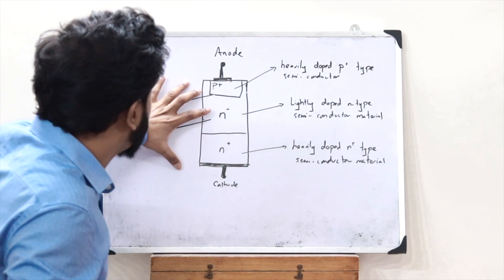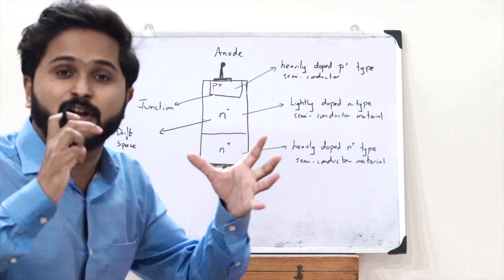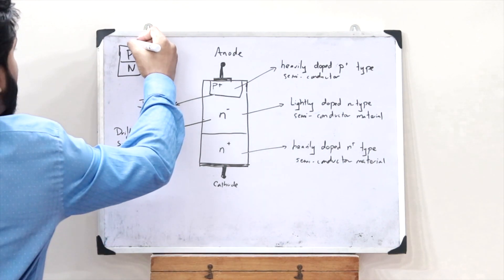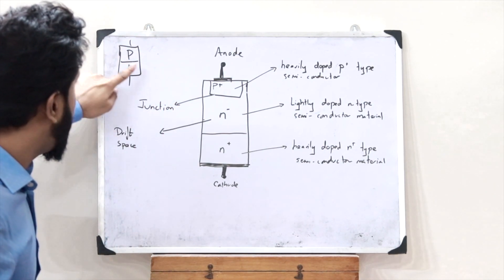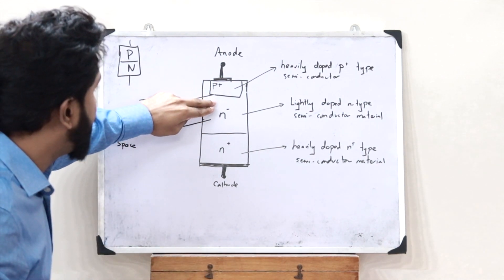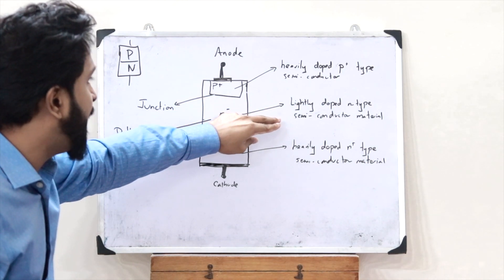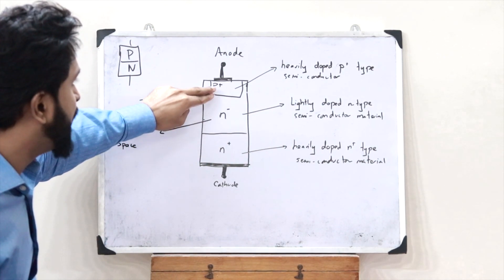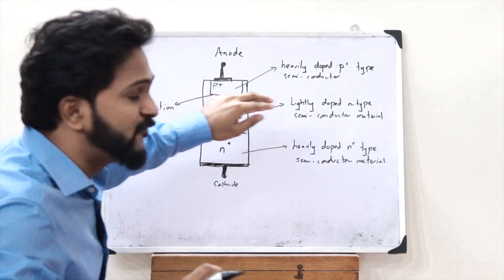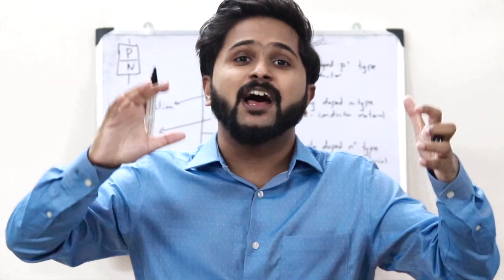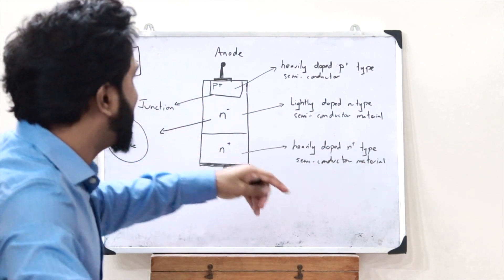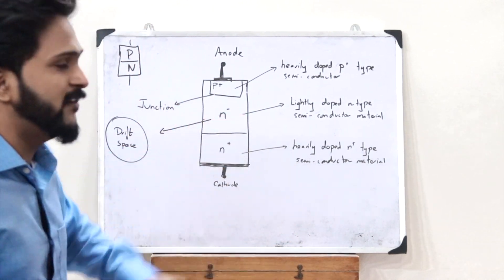When we compare this structure with the structure of a regular P-N junction diode — which was just a P-type semiconductor and an N-type semiconductor — the difference we observe is that it is provided with a lightly doped N-type semiconductor material in between the P and N region, which acts as a drift space. Therefore, this drift space is responsible for the high power handling capability of this power diode. This thus is the basic structure of a power diode.